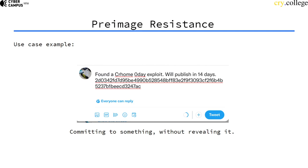One use case for pre-image resistance is committing to something without revealing it. We publish a hash value of something we want to prove we already know, without revealing what it is. Later, we can publish the original data, proving that by the time we published the hash, we already had the corresponding data — since we can't publish a hash without knowing the input beforehand, and we can't find another input that results in the same hash value.